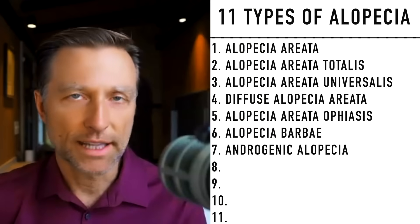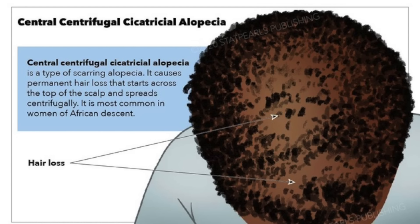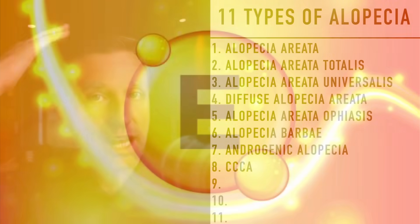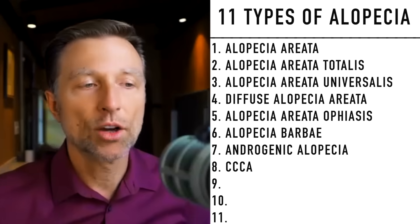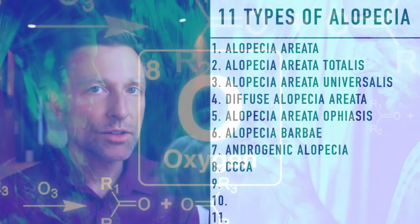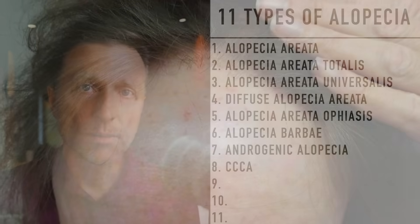The next one is called CCCA — we'll keep it simple with that abbreviation. This type involves scarring on the top of your head and is most common in women of African descent. Massaging vitamin E oil into the scalp can help break down some of the scar tissue and provide more oxygen stimulation. However, if it's been there too long, the scar tissue could become permanent and irreversible.